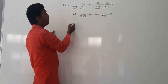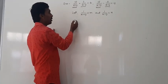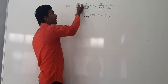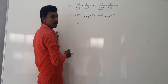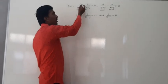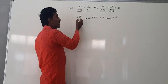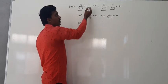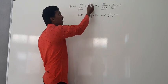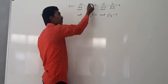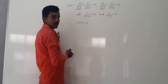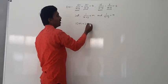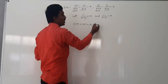Now the first equation becomes: 10 times m plus 2 times n is equal to 4. Since 1 upon (x plus y) equals m and 1 upon (x minus y) equals n, the first equation simplifies to 10m plus 2n is equal to 4. This is the first linear equation in two variables.